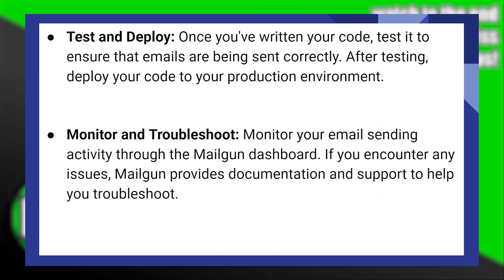Once you've written your code, test it to ensure that emails are being sent correctly. After testing, deploy your code to your production environment. Monitor your email sending activity on the Mailgun dashboard.